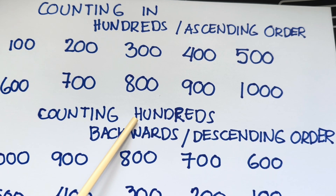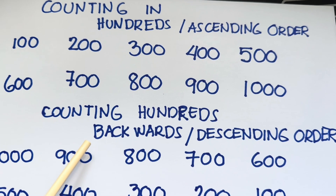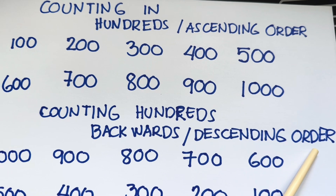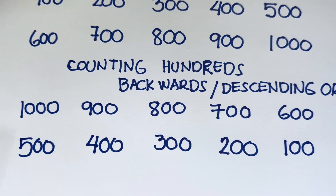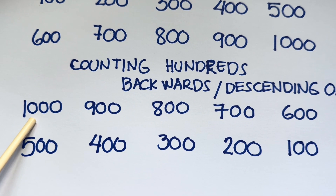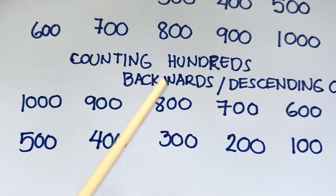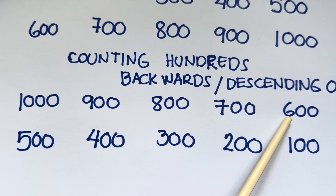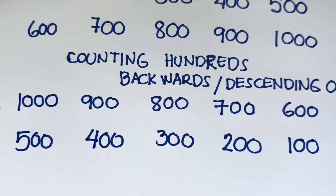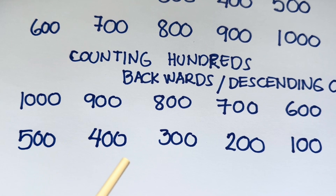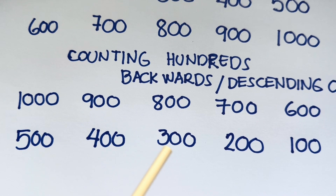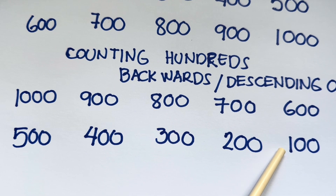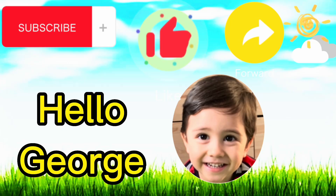Next, counting hundreds backwards or in descending order. 1,000, 900, 800, 700, 600, 500, 400, 300, 200, and lastly, 100.